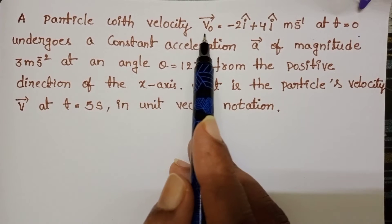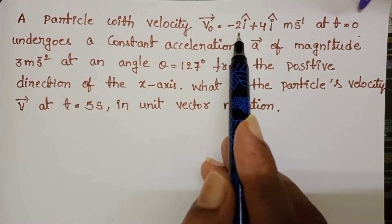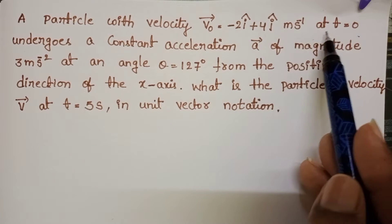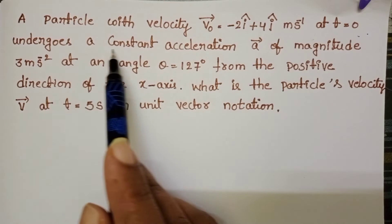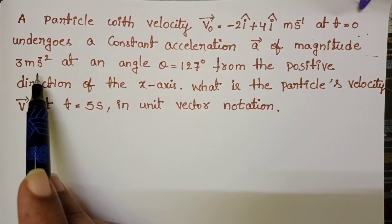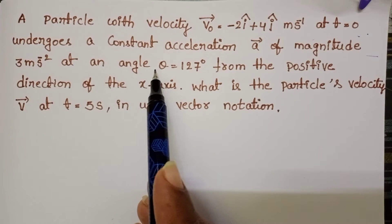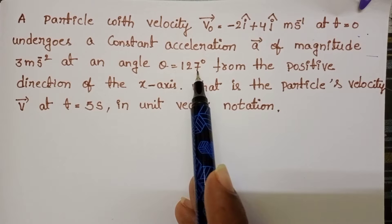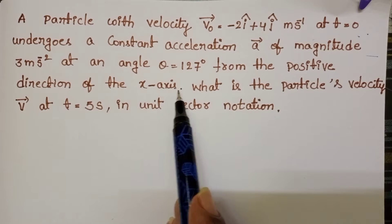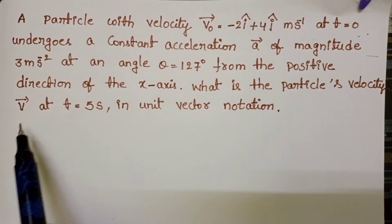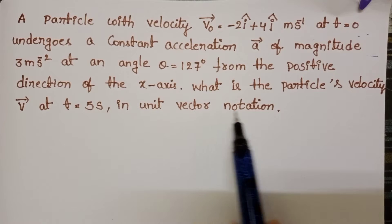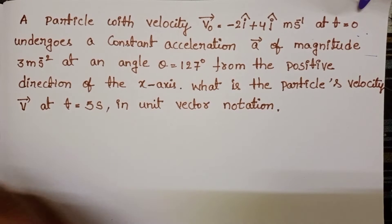A particle with velocity V0 bar equals minus 2i cap plus 4j cap meter per second. At t equals 0, it undergoes a constant acceleration a bar of magnitude 3 meter per second square at an angle theta equals 127 degrees from the positive direction of the x-axis. What is the particle's velocity V bar at t equals 5 seconds in unit vector notation?